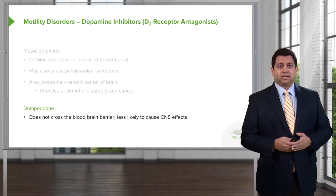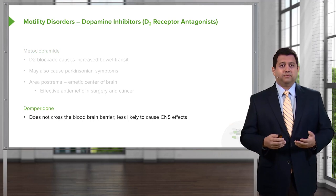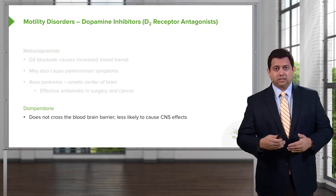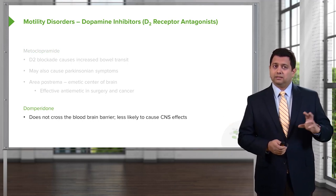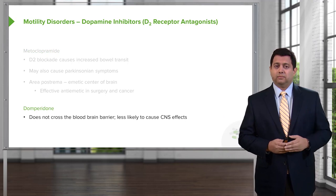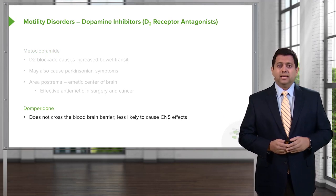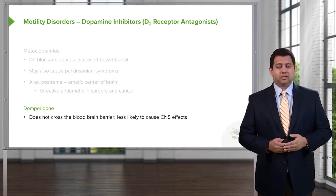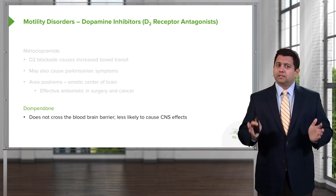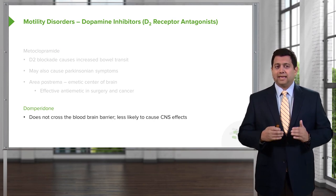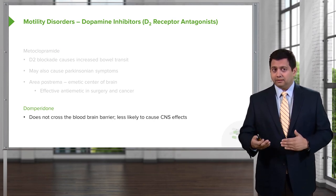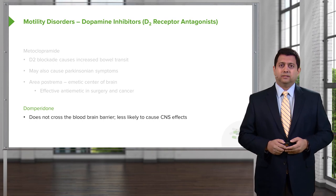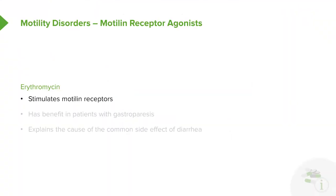Domperidone is another example of these agents. It does not cross the blood-brain barrier, making it different from metoclopramide, and therefore less likely to cause CNS effects. Not surprisingly, the anti-emetic effects of domperidone are not that significant.